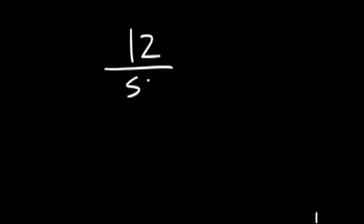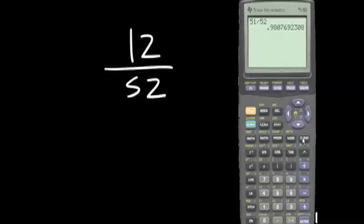There are 12 cards out of 52 that are not greater than 4. If we approximate this answer to the thousandths position, the digit to the right is a 7, which means we add 1 to the 0 for an answer of 0.231.